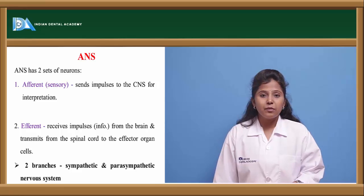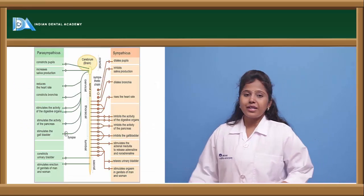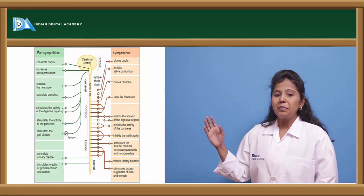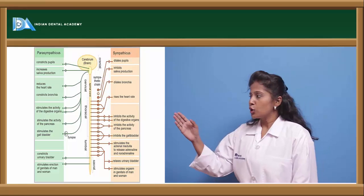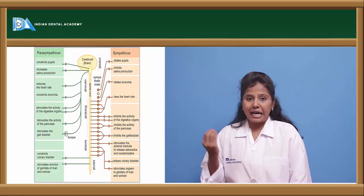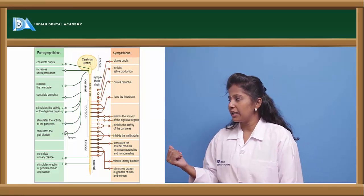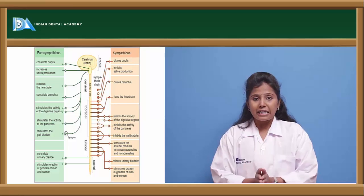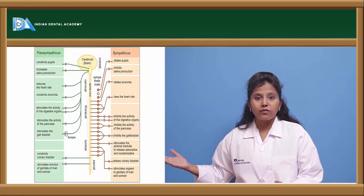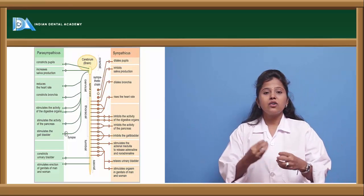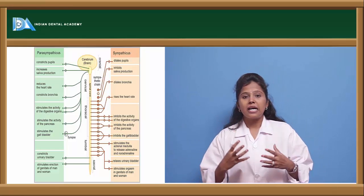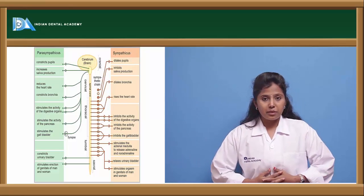Here we can see the pictorial representation of the sympathetic as well as parasympathetic nervous system, with their various effects. On sympathetic activation, it causes dilation of the pupils, inhibition of saliva production, dilation of the bronchial muscles, inhibition of the gallbladder, and relaxation of the urinary bladder. The effects differ from organ to organ — on the heart it causes increased heart rate, on the urinary system relaxation of the bladder, and on the eye dilation of the pupils.